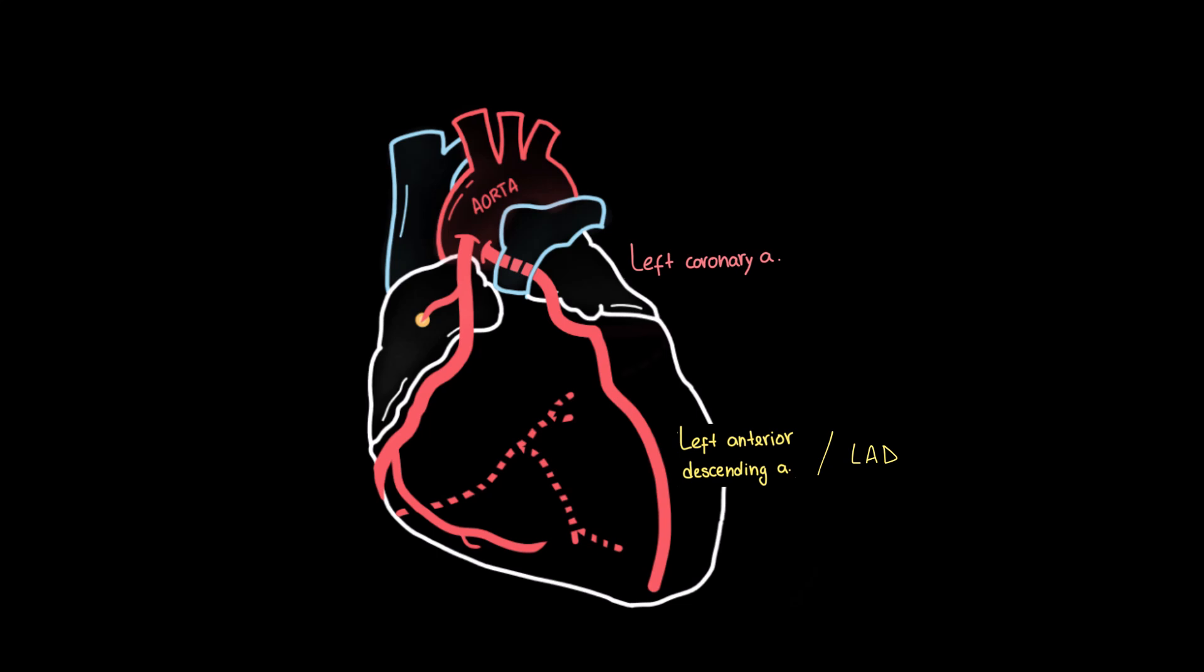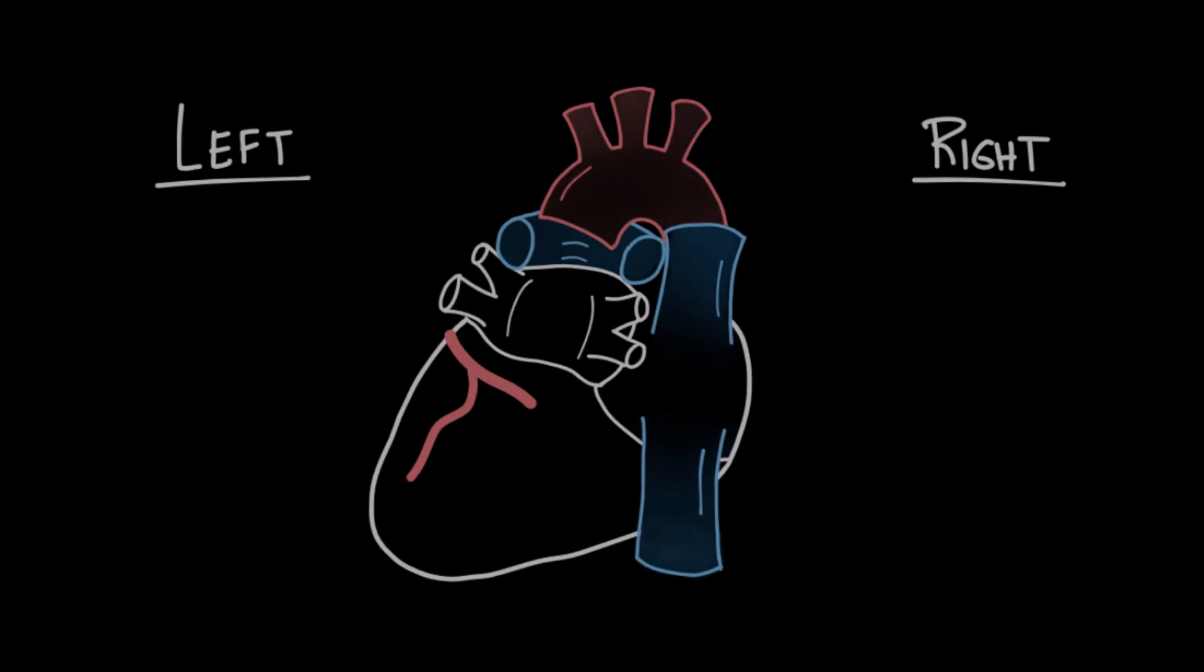Then we have the circumflex artery that wraps around the left side of the heart in the coronary sulcus and supplies the lateral and posterior walls of the left ventricle and the left atrium. The circumflex artery surrounds the left margin of the heart and continues posteriorly. Sometimes gives off a branch called the left marginal artery.